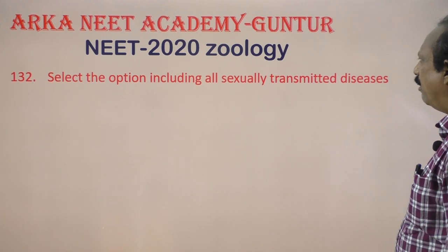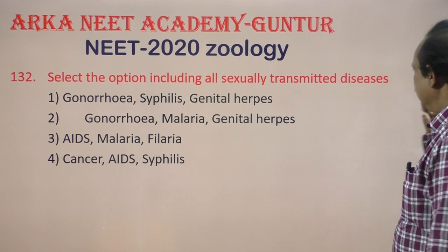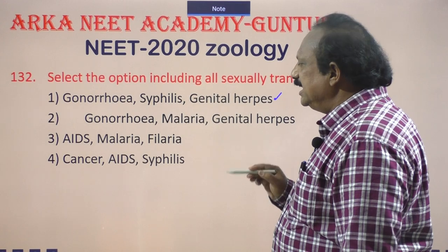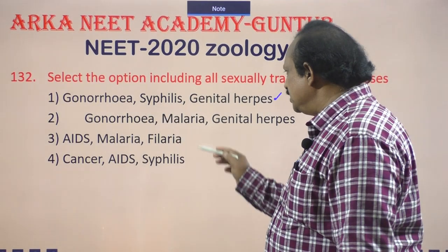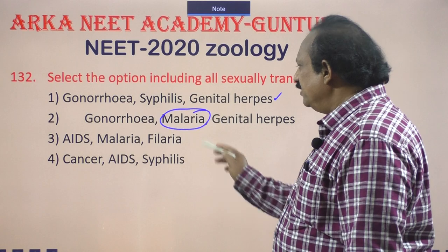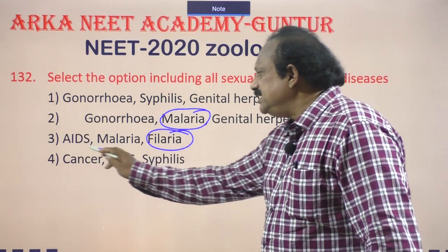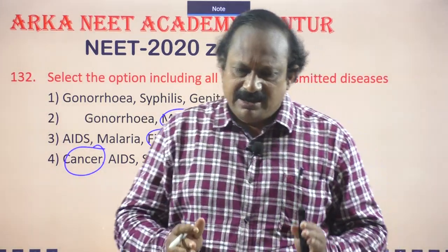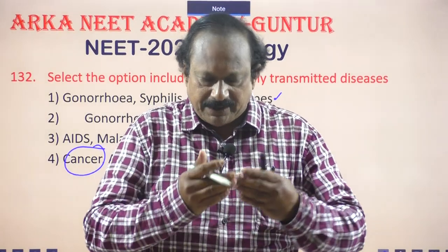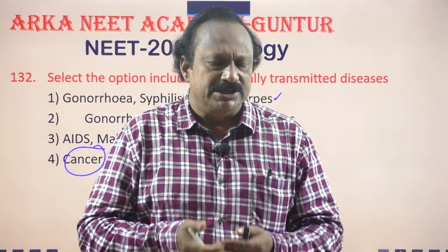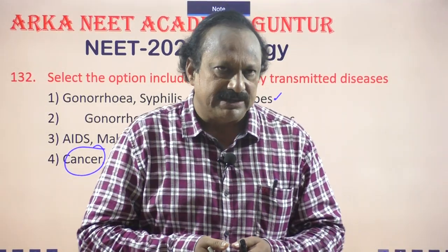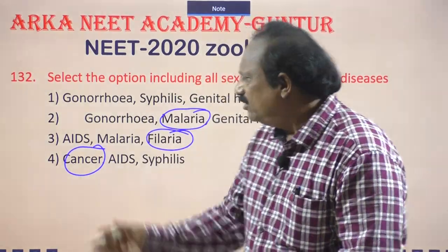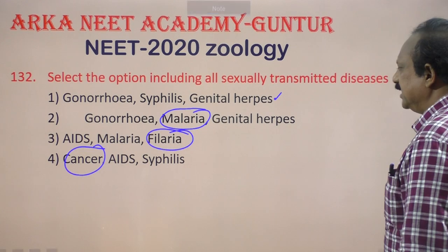Gonorrhea, syphilis, and genital herpes are sexually transmitted diseases. Malaria, filaria, and cancer are not STDs. Students often lose marks on STD questions due to confusion, but here the options are very clear, making it simple to select the correct answer.